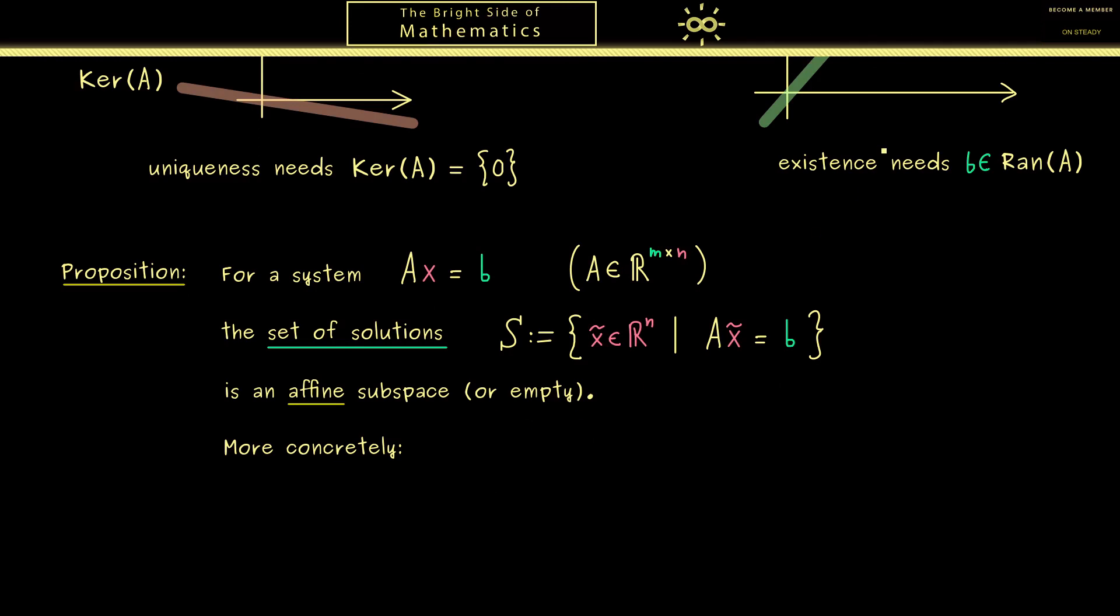Now back to the affine subspace—what do we mean here? Indeed, we should make it more concrete, because we already know it can also happen that the solution set is just the empty set. Therefore, this would be the first case: either we have that S is the empty set, or we have the more interesting case that S is a translated subspace.